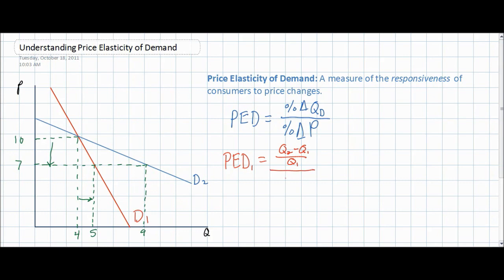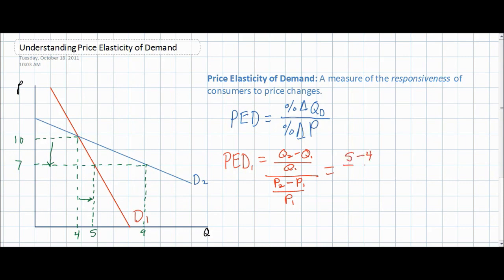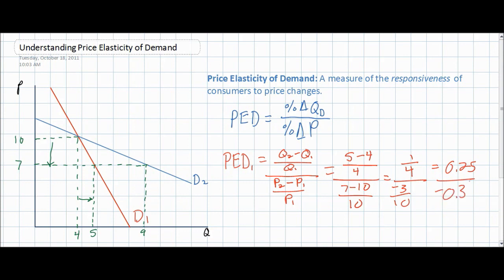Similarly, the percentage change in price will be the new price P2 minus the original price P1, divided by the original price P1. Now all we must do is plug our numbers from the graph into this equation. The percentage change in quantity is 5 minus 4, divided by the original quantity of 4, and the percentage change in price is 7 minus 10, divided by the original price of 10. Simplifying, the percentage change in quantity is 1 over 4, or 0.25, and the change in price is negative 3 over 10, or negative 0.3.